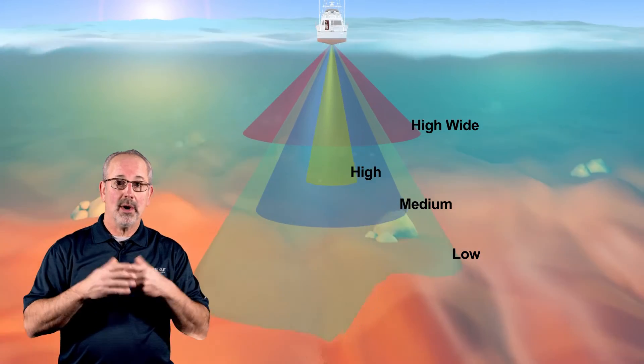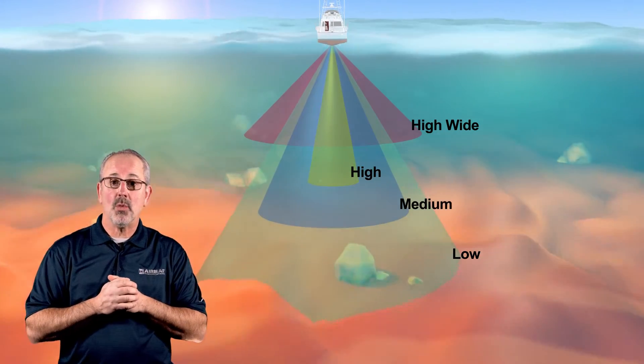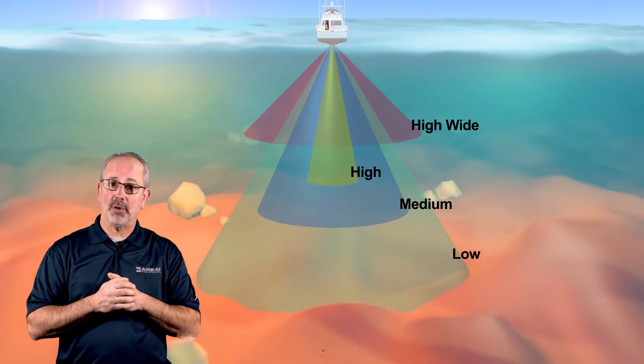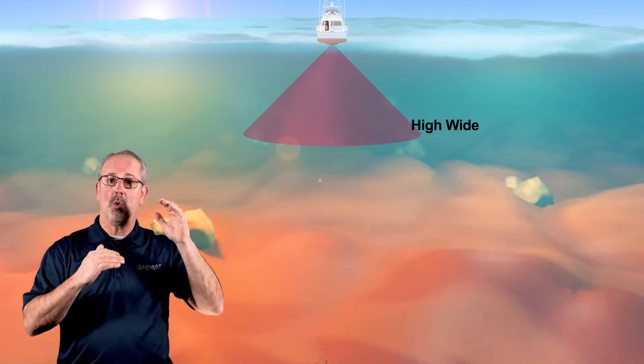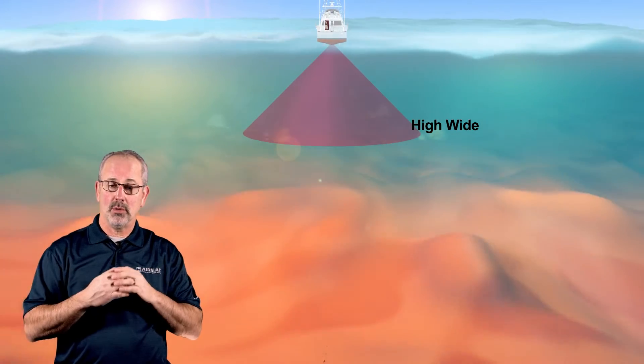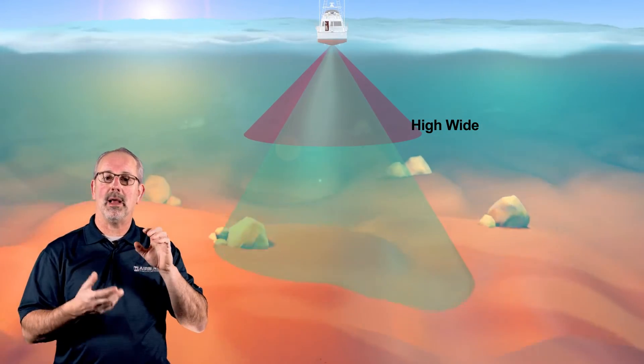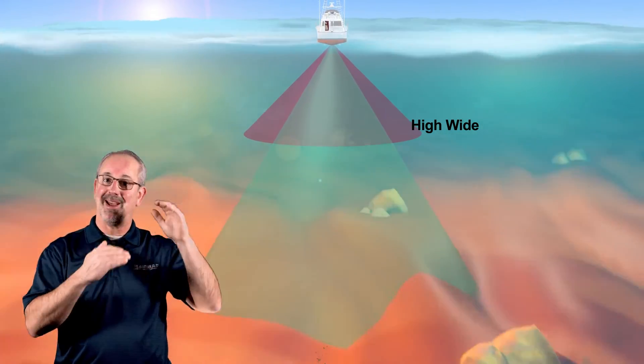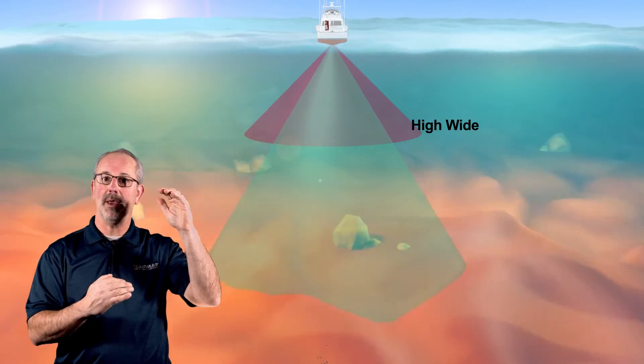So what does a captain do? A captain wants to look at a couple of different things. Captain wants to look at the upper water column for certain species of fish that he's looking for that are in the upper column, while keeping an eye a little bit deeper for something that that high wide beam might miss.